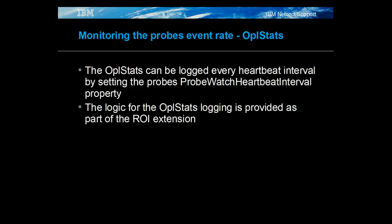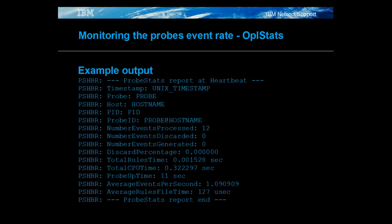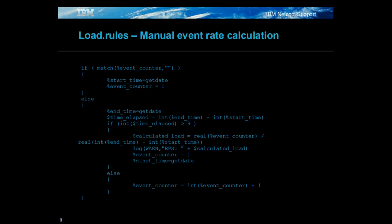For the OPL stats to be used, the probe's property probe watch heartbeat interval needs to be set to a value in seconds for which the OPL stats need to be logged to the probes log file. The rules file logic shown was taken from the ROI extension package's rules. The log messages provide a simple report regarding the probe statistics per heartbeat interval. Key information is the average events per second and average rules file processing time, which are useful in determining the event load and rules file efficiency.